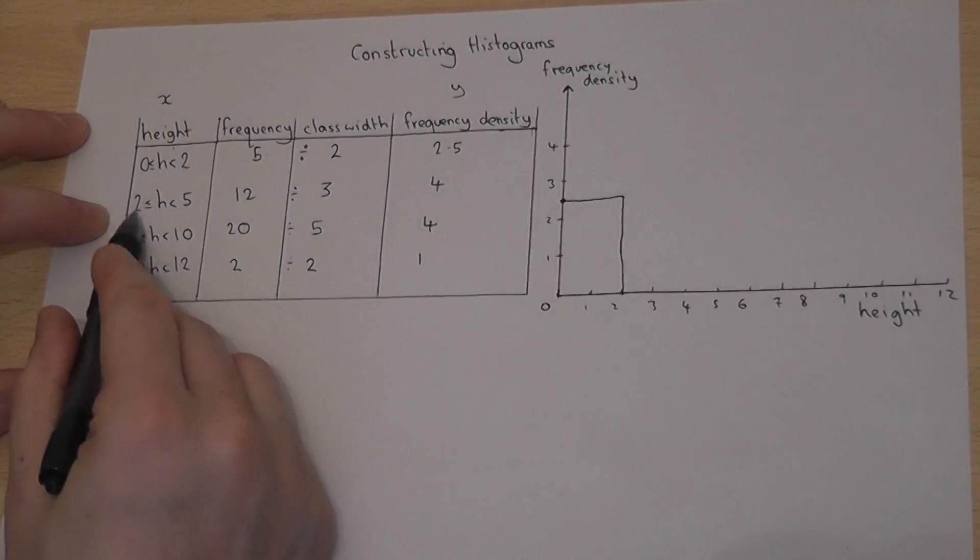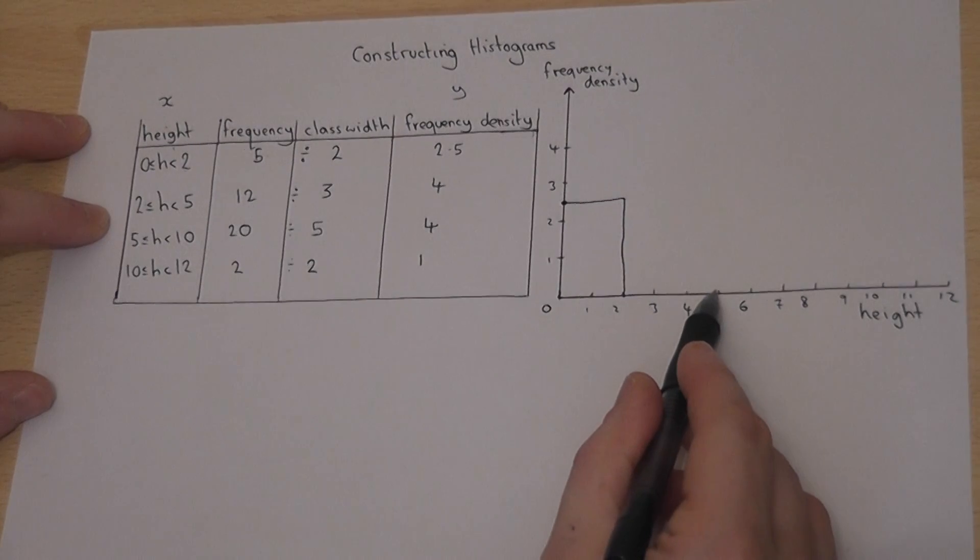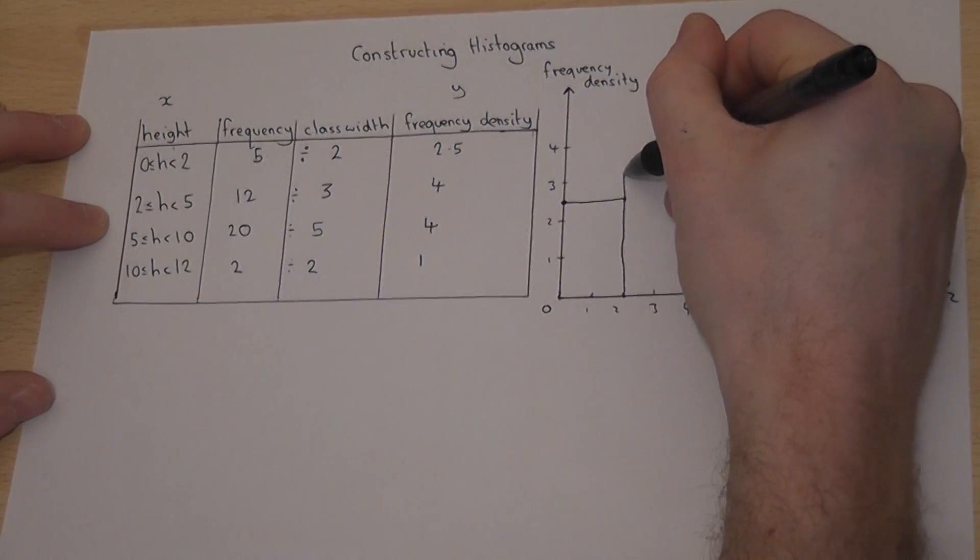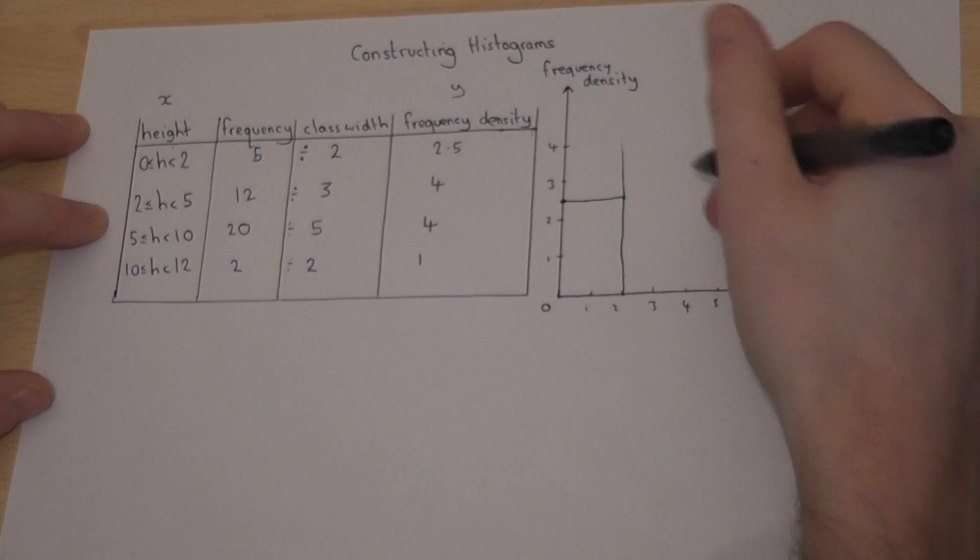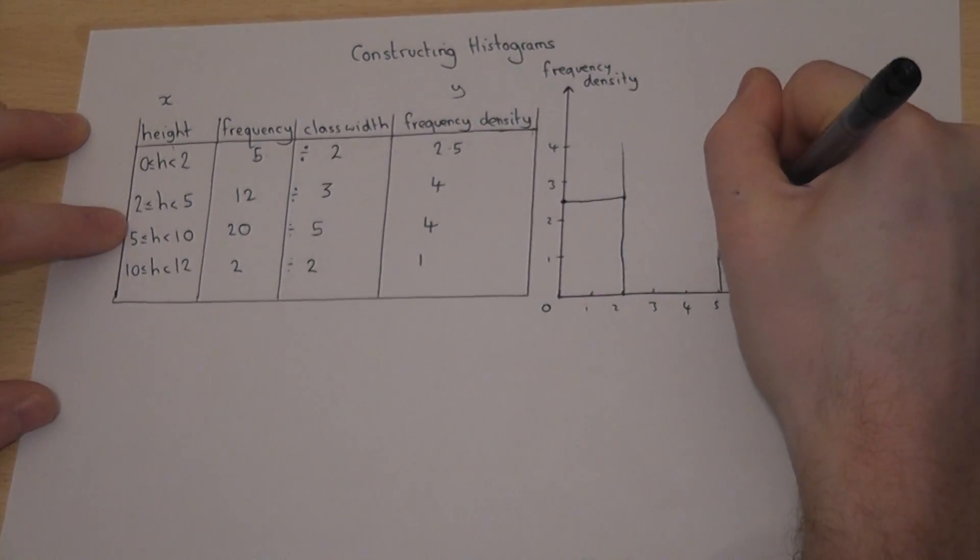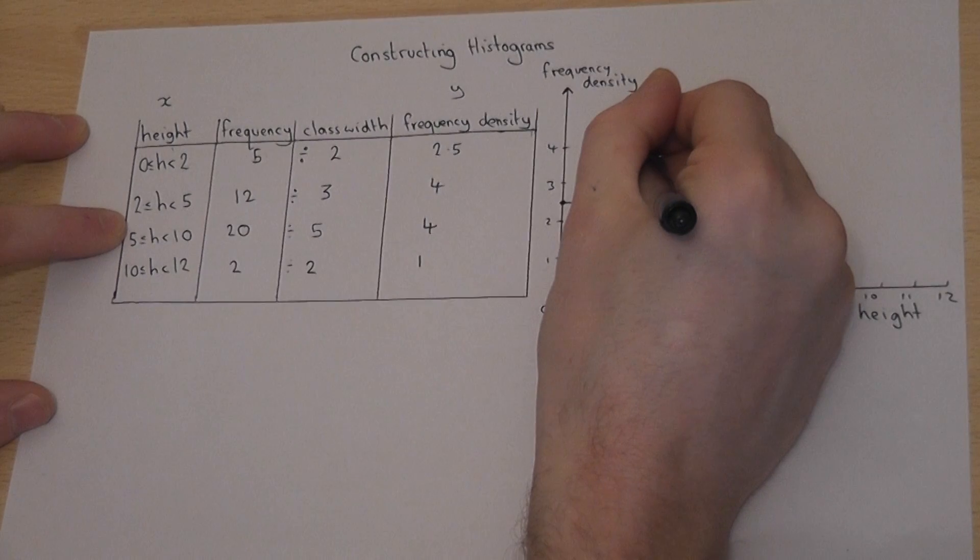The second bar, between 2 and 5, goes as high as 4. So up to 4, and then across.